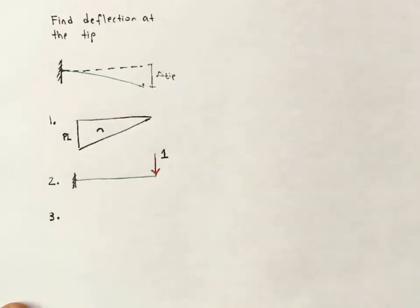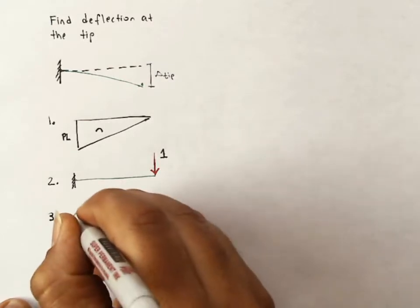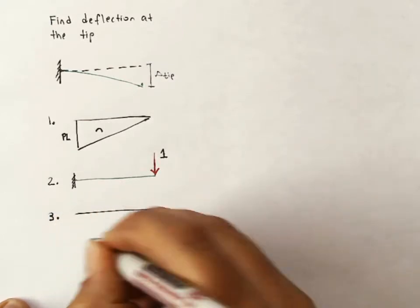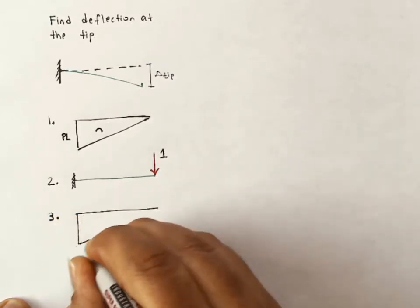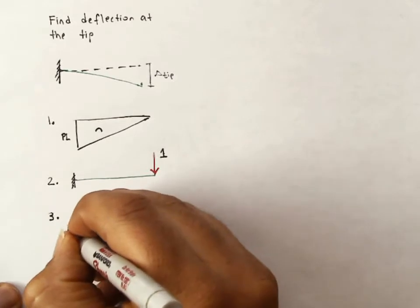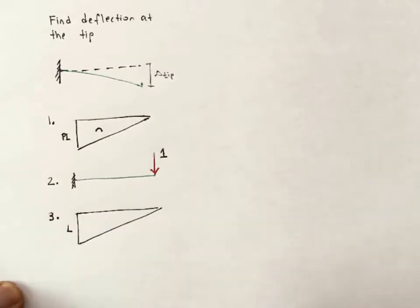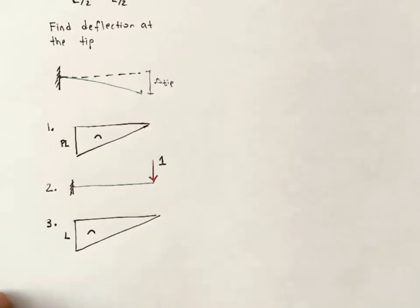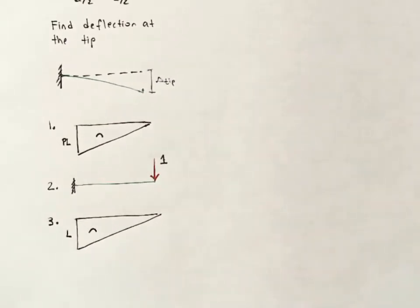Step three is to draw our virtual moment diagram. Once again, this should be simple. You should have this moment diagram memorized for a cantilever with a point load at the end. Magnitude is the force times the length, or one times L, or just L. And the curvature here is downward. So, so far, everything has been quite normal. We haven't had any problem. We haven't even accounted for that change in cross-section.